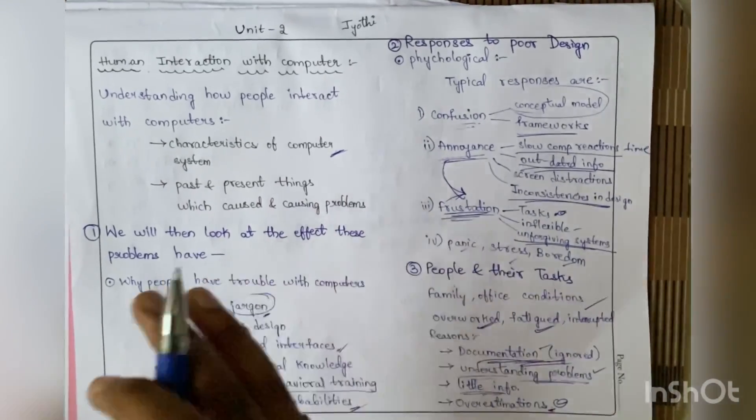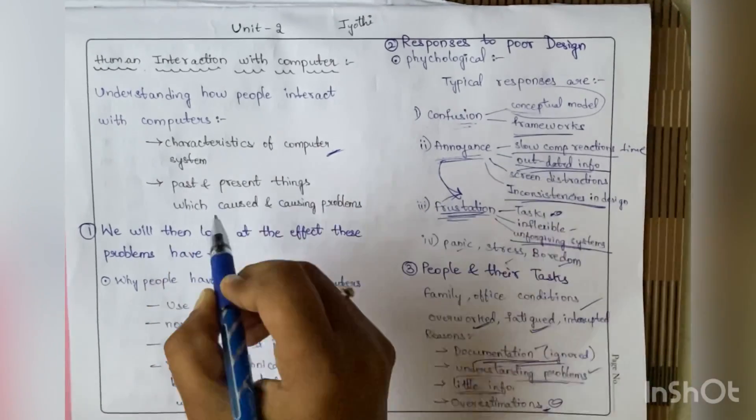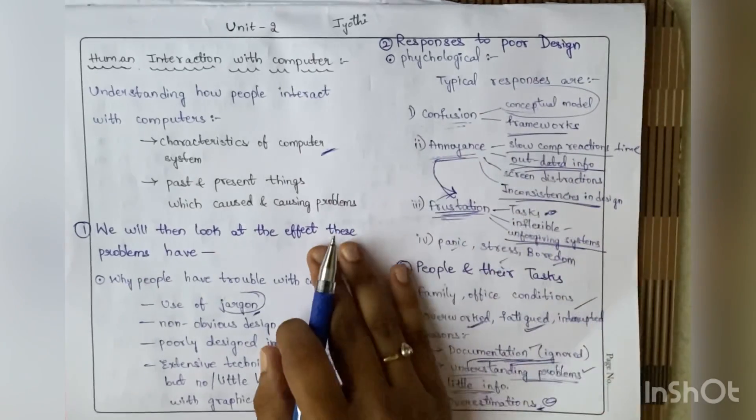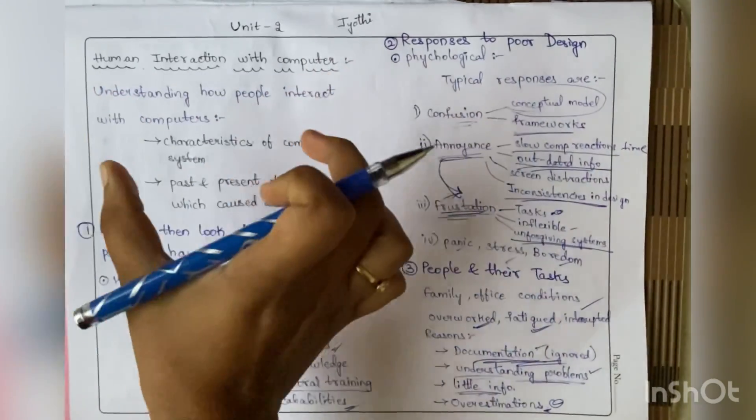We also need to know what conditions are causing problems - past and present things which have already caused or are causing problems for the interaction process. In this human interaction with computers topic, we have three subtopics.